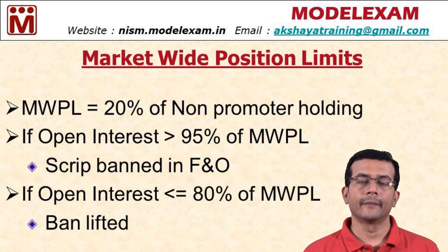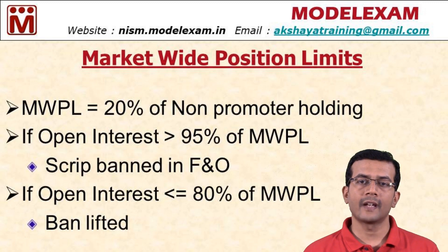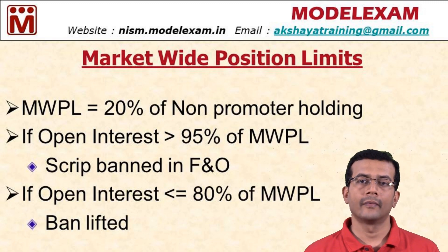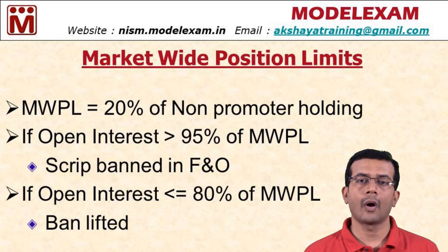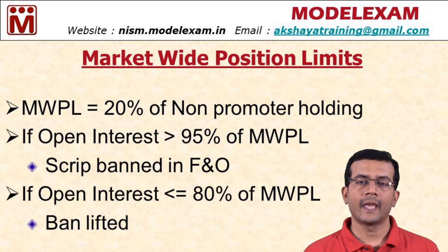Now the third scenario: a trader has taken a short position and now the stock gets banned in F&O. He can go and take a long position to square it off. In simple terms, a trader cannot take a new position in derivatives of that particular stock or add to his existing position, but can only square off and decrease his position.